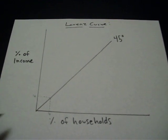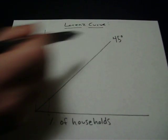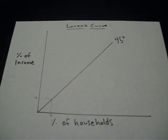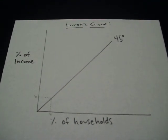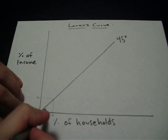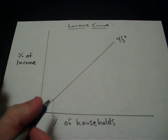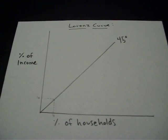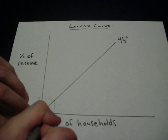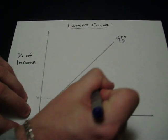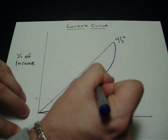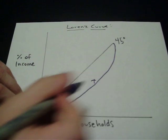They're getting their fair share. So if everybody was equal, this is what the Lorenz Curve would look like. Of course, we know, especially in the United States, that this is not the case. We know that for a country where we have rich and poor, we probably have a curve that maybe looks something like this — I'll call it x.